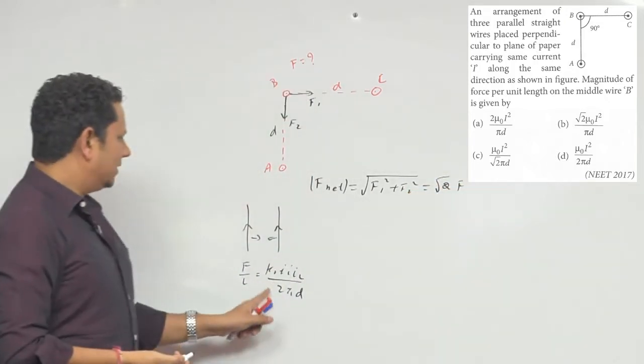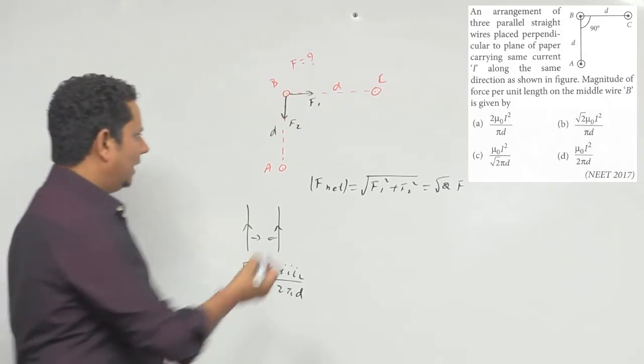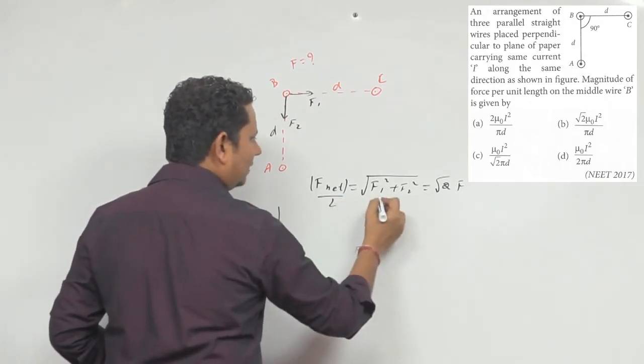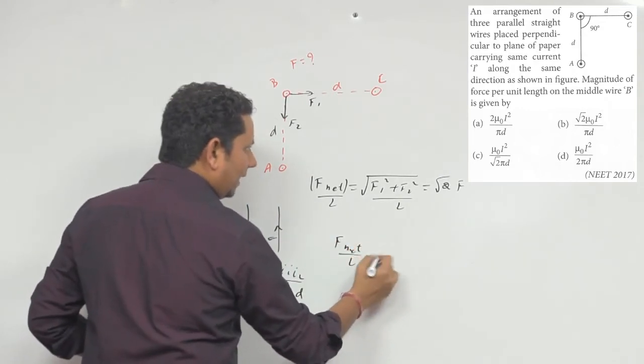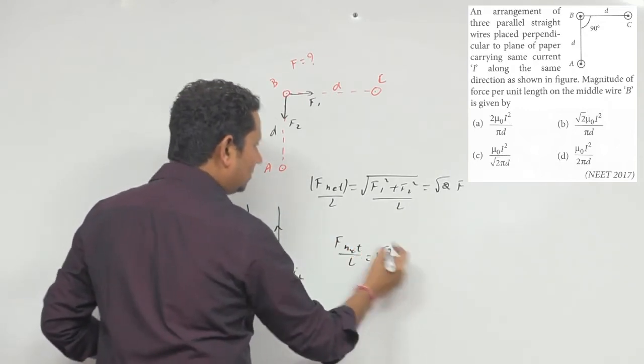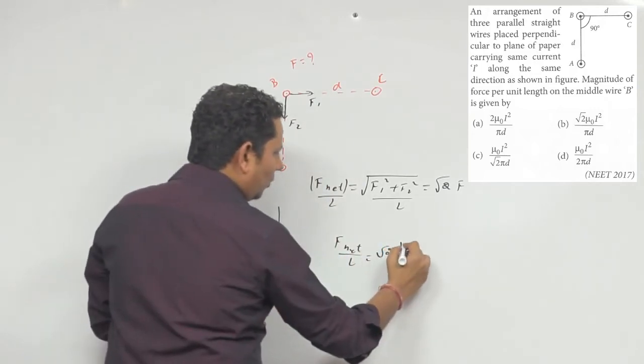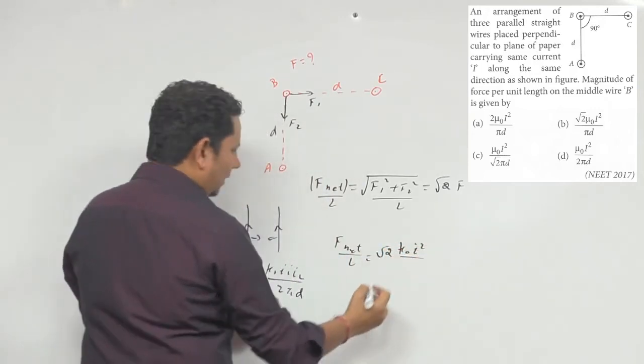बस आप में यहां पर f की value लिखनी रह गई तो यहां पर f net per length जो आएगा वो हो जाएगा under root 2 times force, वह आ जाएगा आपका mu naught i square divided by 2 pi d.